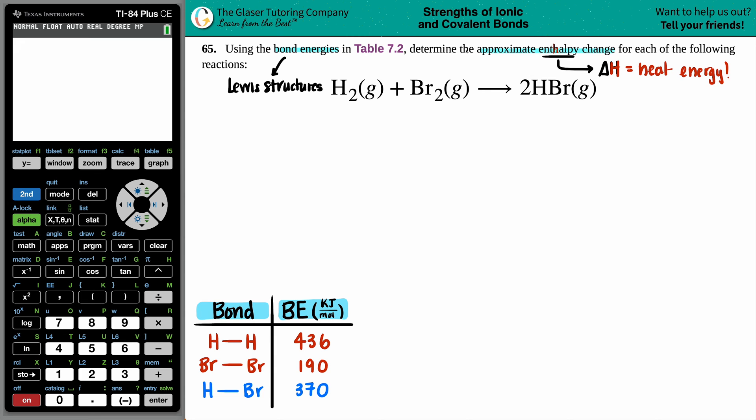So H2, we have two hydrogens, and each hydrogen only has a single bond. Each hydrogen only has one electron. So that's just a single bond. It doesn't matter that this is in the gas state. So for Lewis structures, who cares?